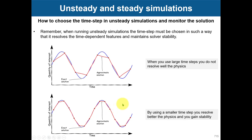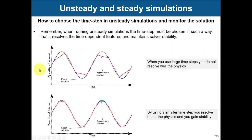The idea of choosing the time step is this: you should choose a time step in such a way that it resolves the physics involved. Imagine that the blue line represents your analytical solution. If you use a large time step you are missing some physics. Instead, reduce your time step and you start to resolve the physics better. Remember that your solvers are implicit, so in theory you can use any time step, any CFL number — but as you use a time step too large, you can miss the whole physics.